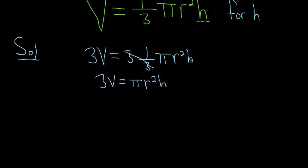All right, so we're looking for h and it's being multiplied by πr². In order to undo that, we have to use the opposite operation of multiplication, which is division. So let's divide both sides by πr².